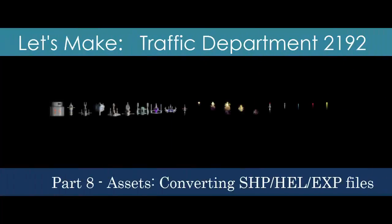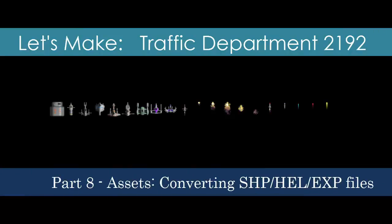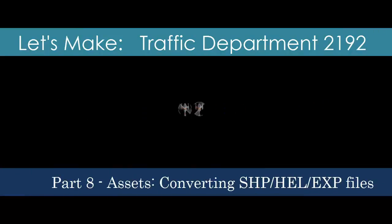We've learned four different ways that Traffic Department stores images. Now it's time to put that knowledge to use by sprinting through three archives in one sitting. The SHP, HEL, and EXP files all use the same storage method as the BLK files. The lesson this time is how to get stuff done.